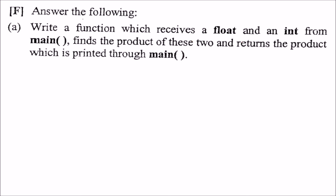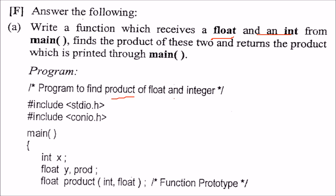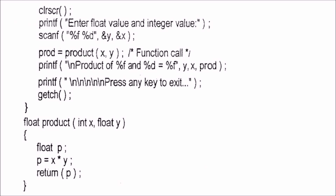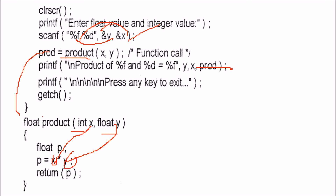Write a function which receives a float and an integer, finds their product, and returns it to be printed through main. We declare float x, yn, prod, write a function prototype for product taking an integer and float with float return type. We ask the user for a float value and an integer value, call the product function, and print the result.